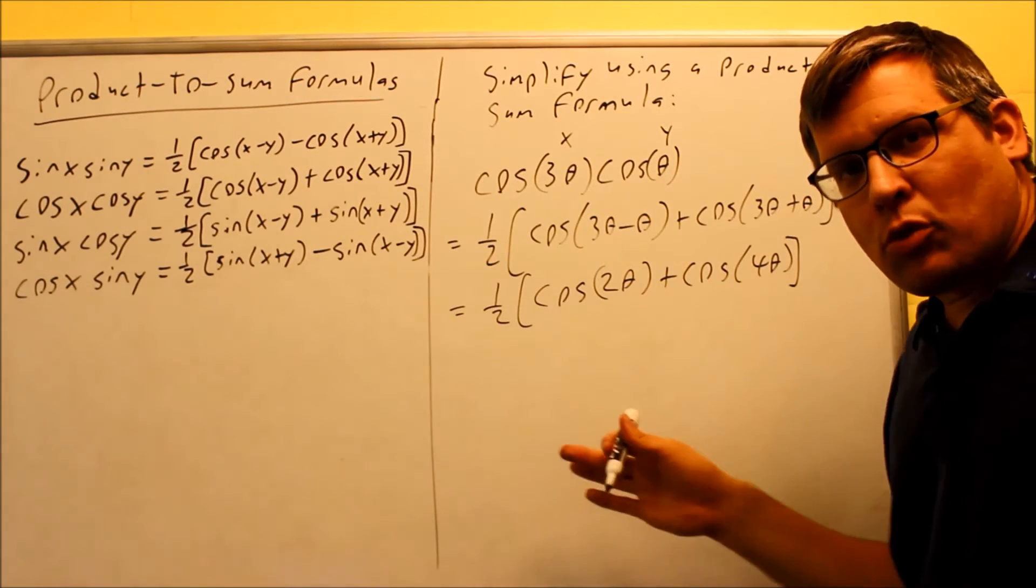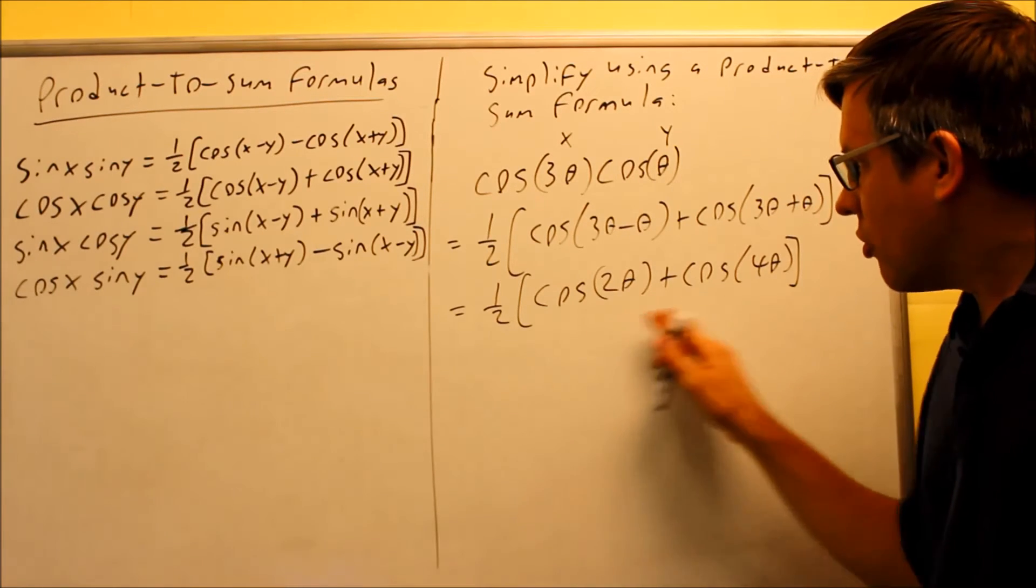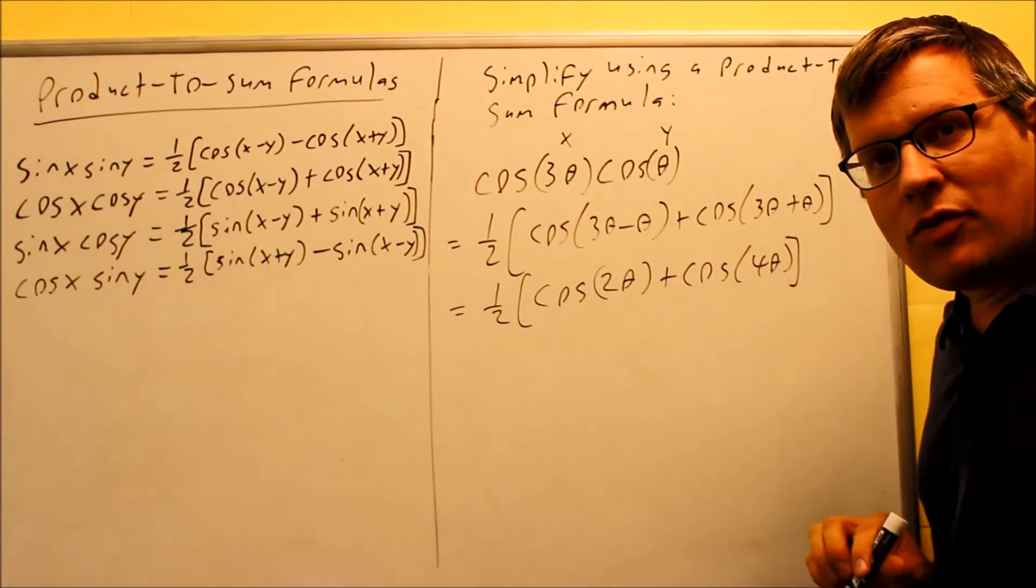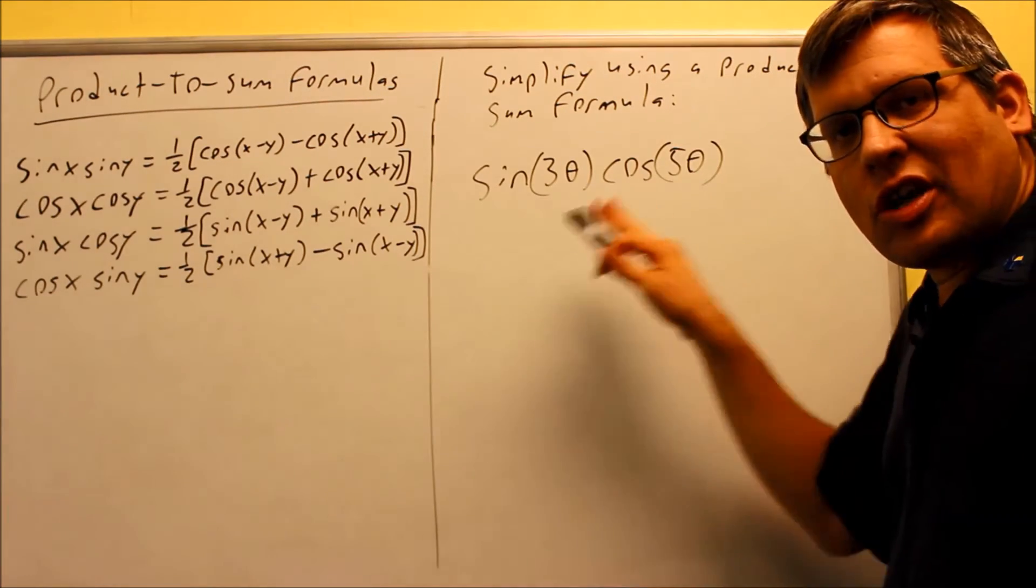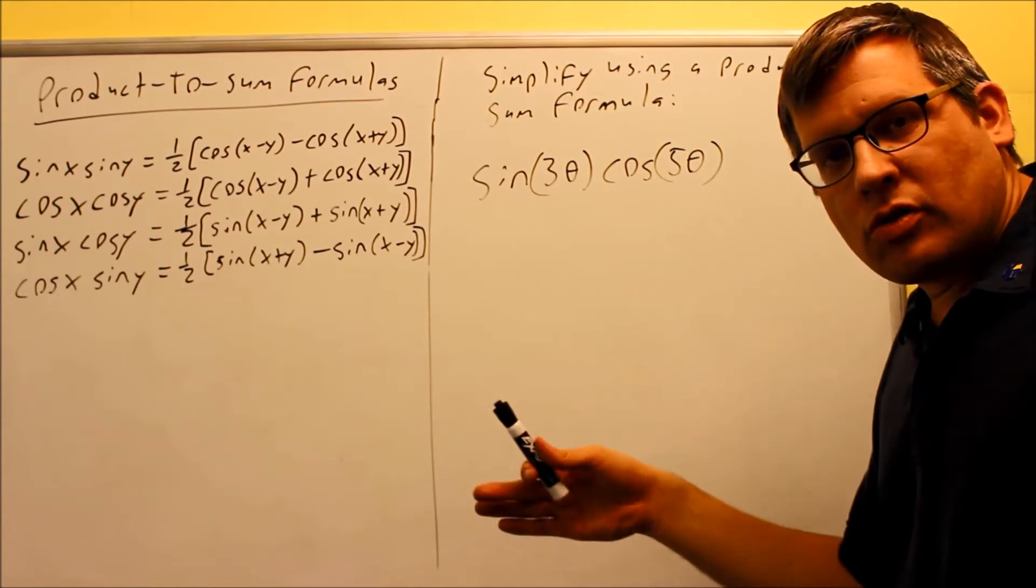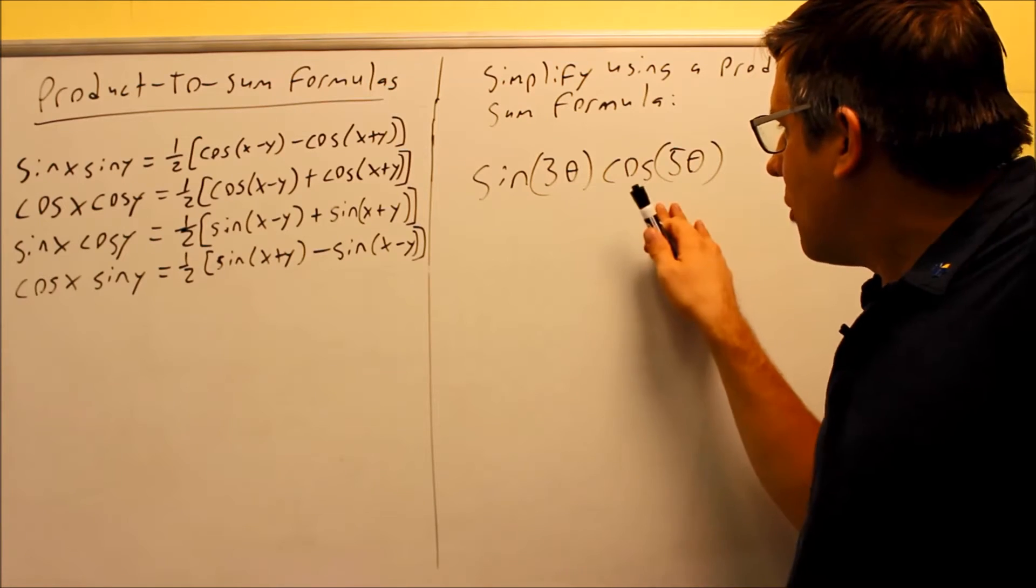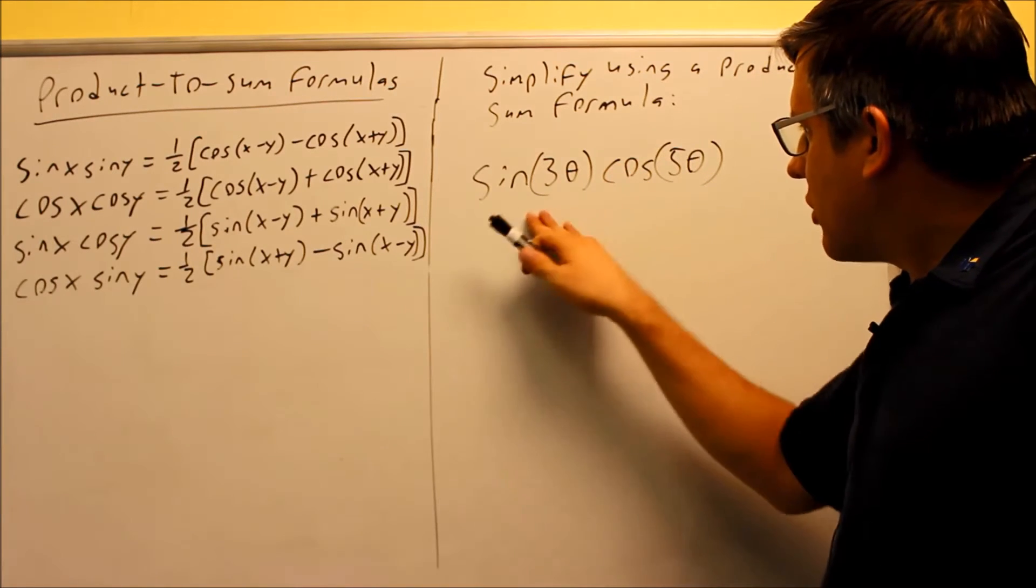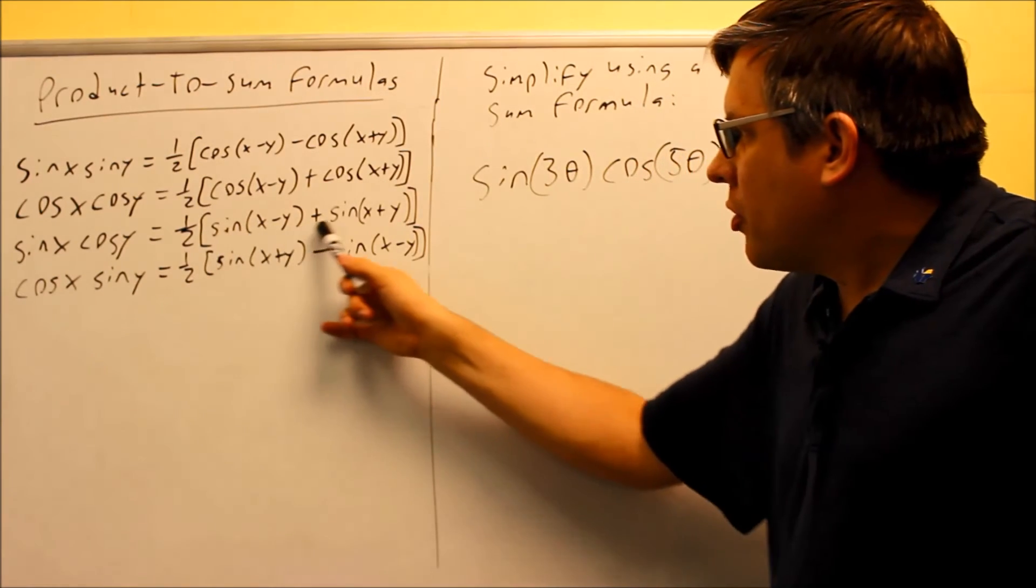The next example we'll look at is one where we end up with a negative angle and so that's one where I'll show you some options that you have. Okay. Now, this example, I'm going to do it slightly different than I have in my notes. I wanted to show you two different ways of doing it. The written notes has one method and this is going to be a different method. So, first of all, in the notes, what I did was I noticed that this is sine cosine and so I went into here and I used this formula.